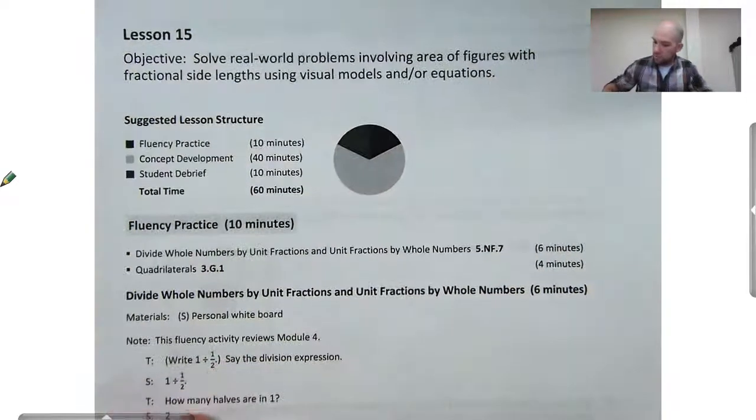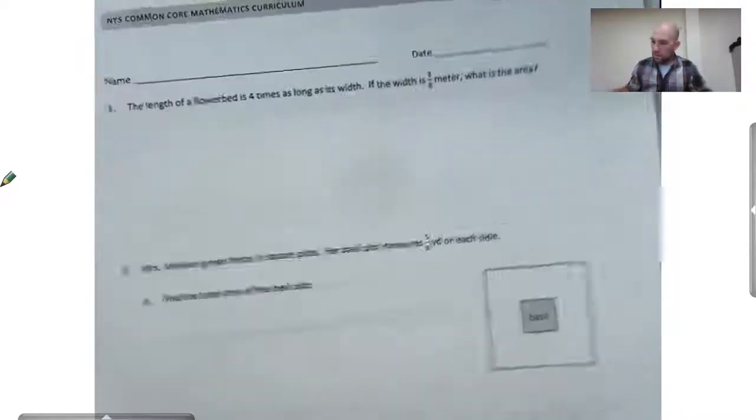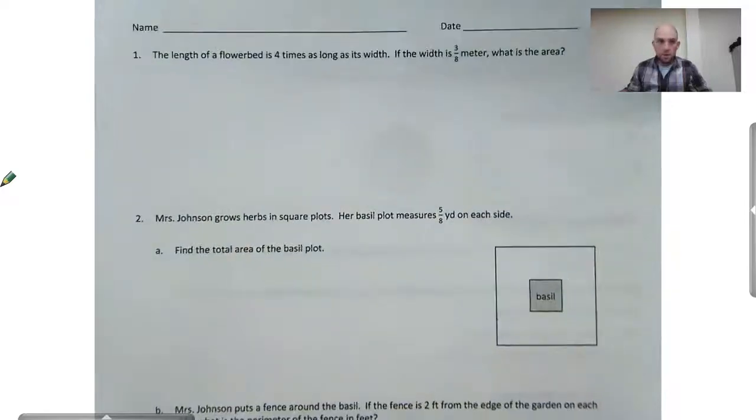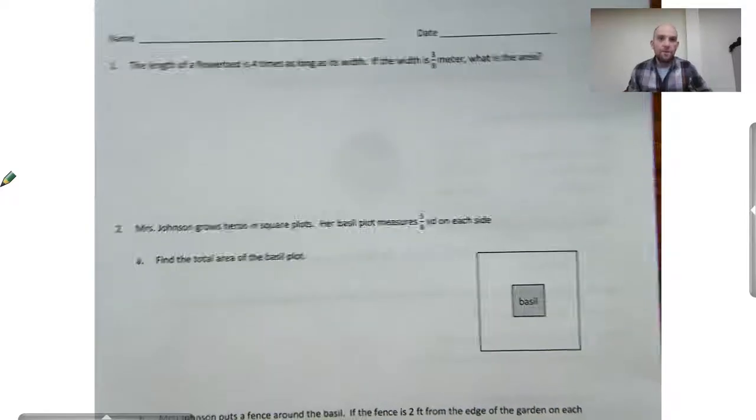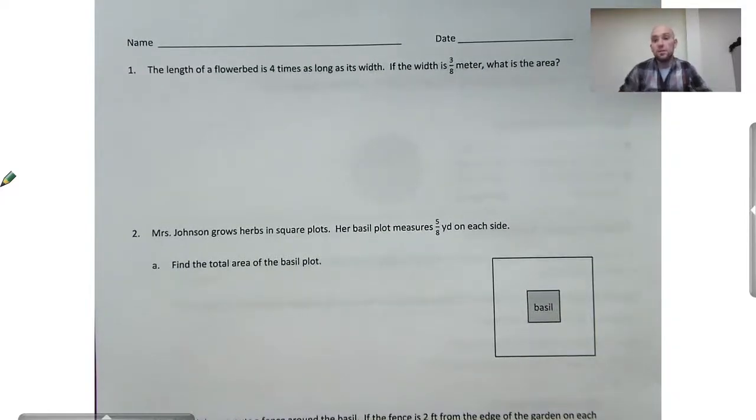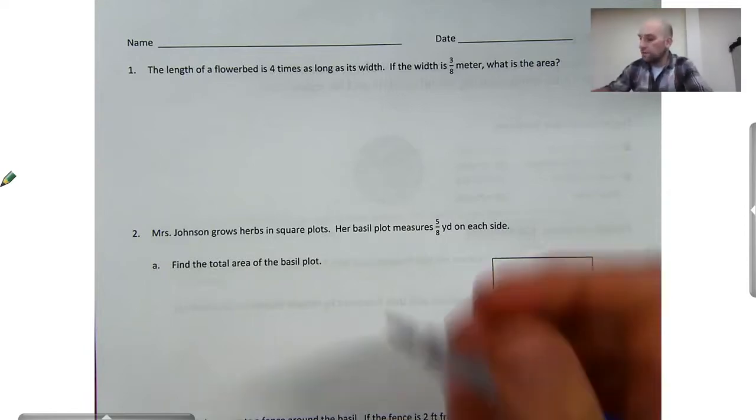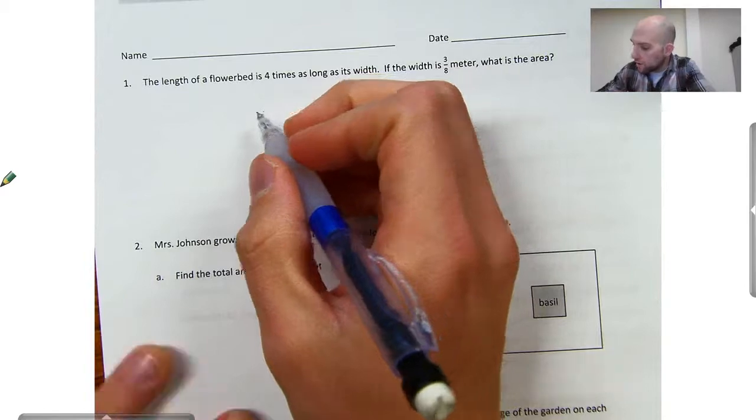If we look at our first page here, number one: the length of a flower bed is four times as long as its width. If its width is three-eighths of a meter, what is the area? So I'm going to start by drawing the flower bed. It's going to be a rectangle.